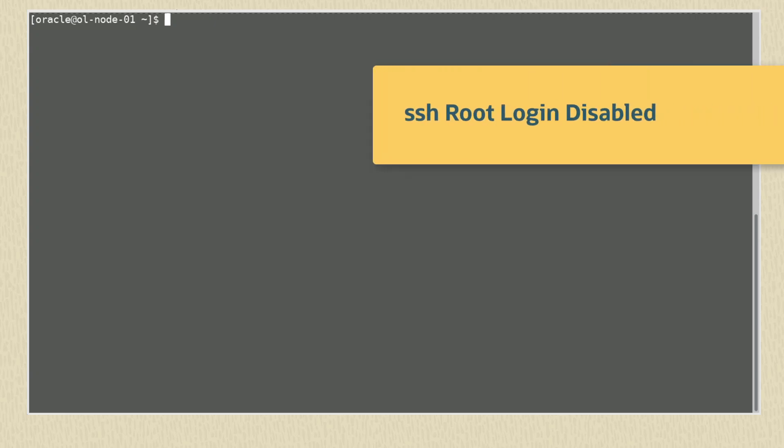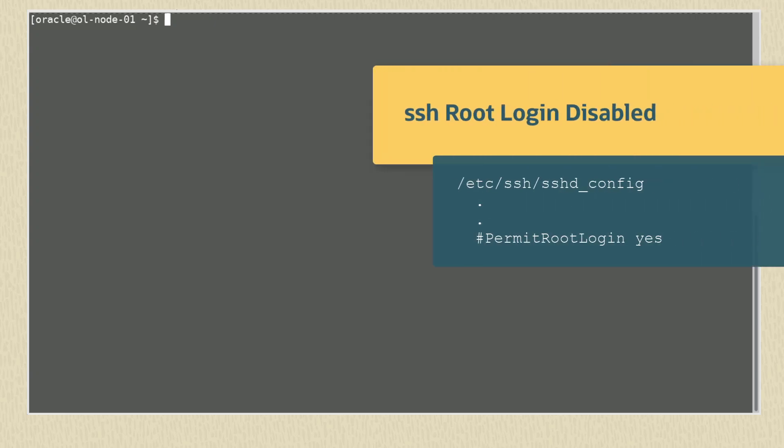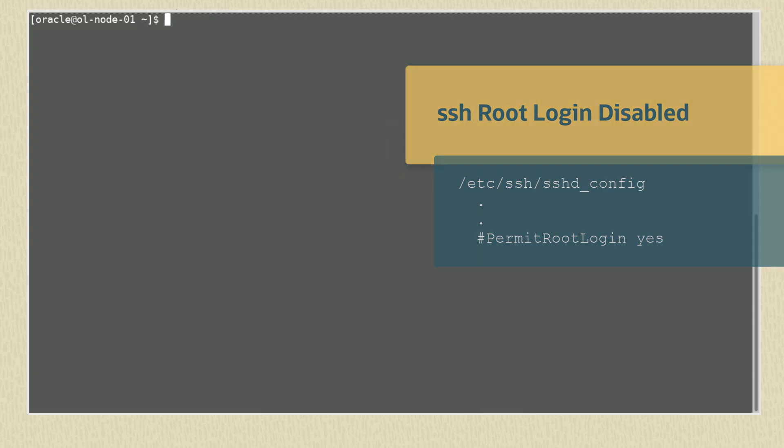Ensure that SSH root login is disabled in the /etc/ssh/sshd_config file. Edit the file and comment out the entry 'PermitRootLogin yes', or change its setting to no.